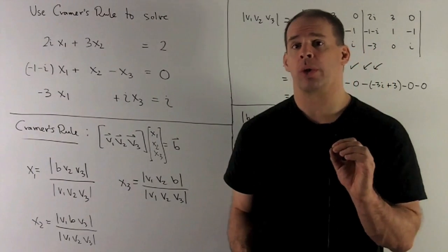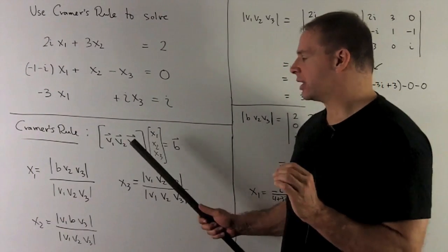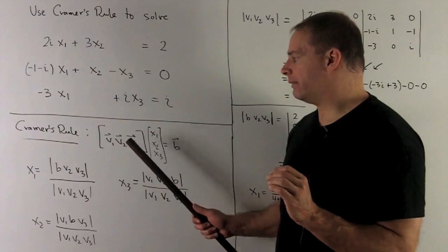To use Kramer's rule, we'll write our matrix A as column vectors V1, V2, V3.